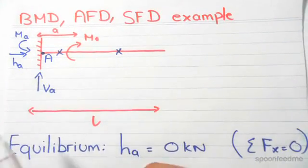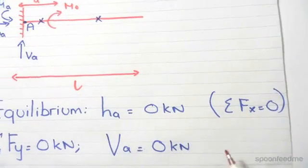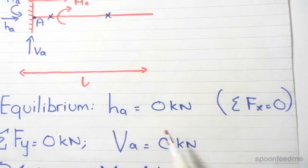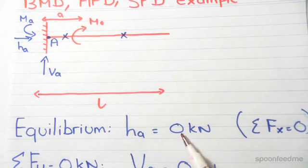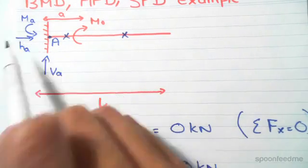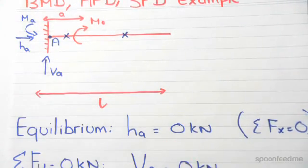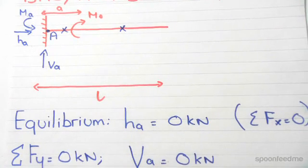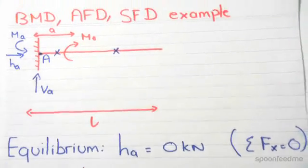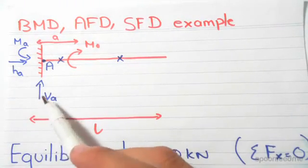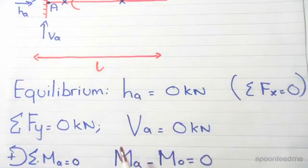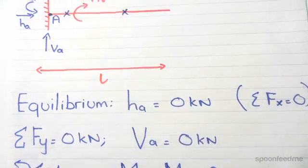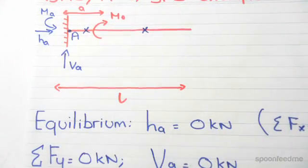We do equilibrium on the structure. Sum of forces in the horizontal direction equals zero. Ha is the only horizontal force and has nothing to react to, so Ha equals zero kilonewtons — there is no horizontal restraint. Next, sum of forces in the y-direction equals zero. Va is the only vertical reaction force and has nothing to react to, so Va equals zero kilonewtons. So the vertical and horizontal restraints are both equal to zero.